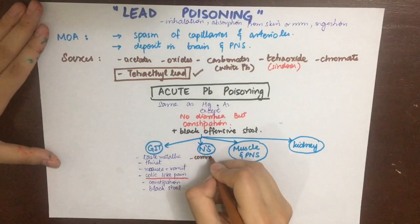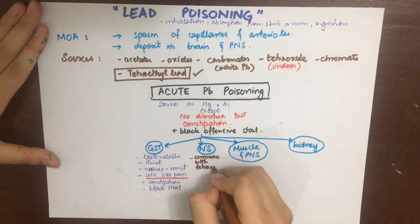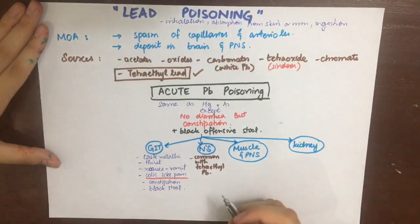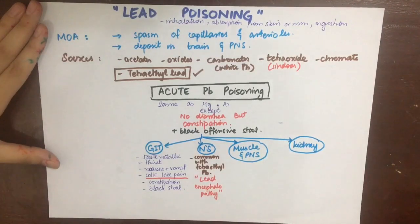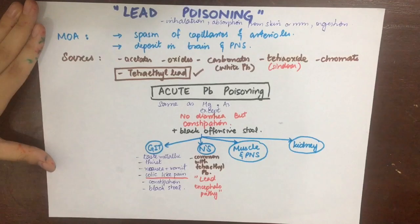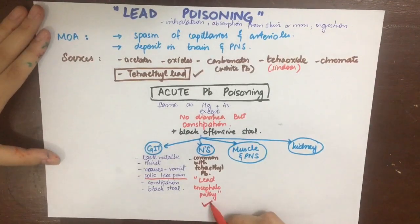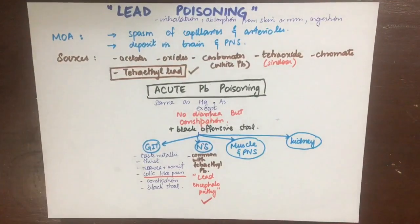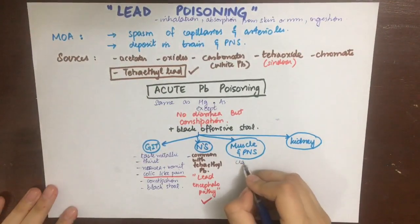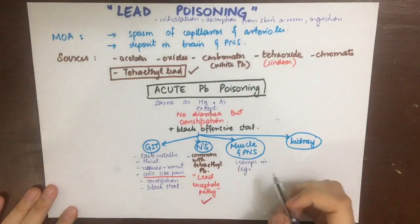The nervous system symptoms are more common with tetra ethyl lead, leading to lead encephalopathy. It is characterized by headaches, sleeplessness, tremor of eyes, mouth and fingers, sometimes paralysis, loss of vision, hallucination, excitement, delirium, apathy, convulsions, permanent mental changes, or insanity.